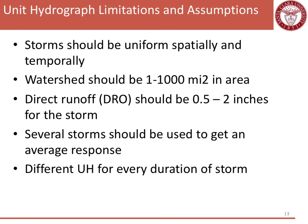That's the end of the example. I wanted to talk about a few limitations in using unit hydrographs. The first one is that storms should be uniform both spatially and temporally, so maybe a pretty uniform rainfall spread evenly throughout the watershed. The watershed should be between 1 and 1000 square miles in area, so not too big and also not too small. The direct runoff should be 0.5 to 2 inches for the storm. When you're creating these unit hydrographs, you want to use several storms to get an average response. And you also need a different unit hydrograph for every duration storm.